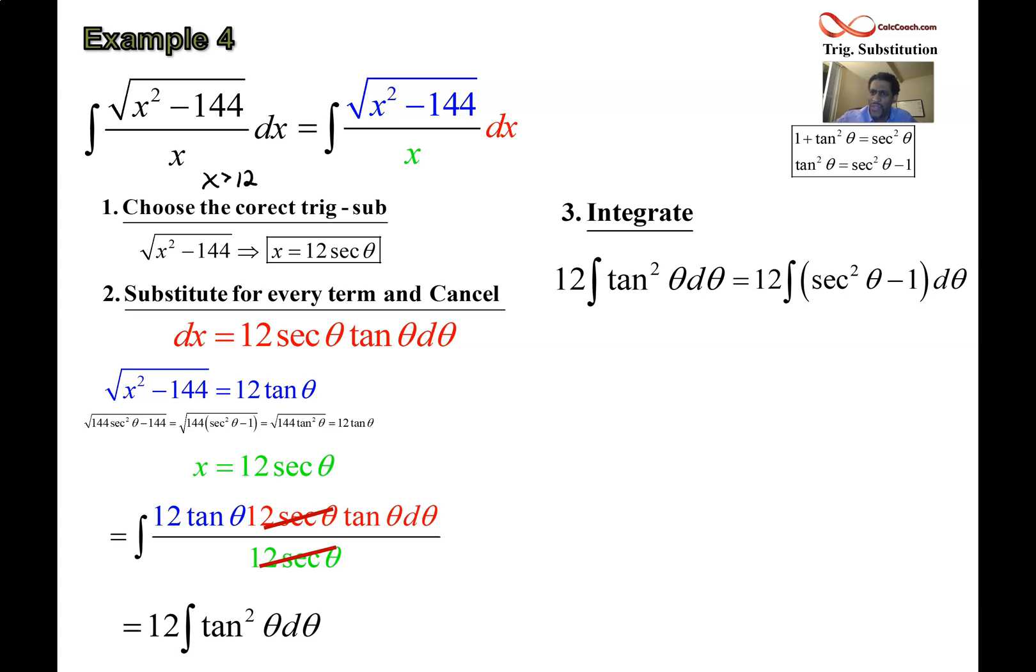What function has secant squared as its derivative? It's tangent. And so the antiderivative in theta is tan theta minus theta with the 12 on the outside. This is an indefinite integral. We can go ahead and throw the plus C on now. But we can't give this as our answer. The question came to us in terms of x. We were asked for the antiderivative in that variable. So we have to trade back.